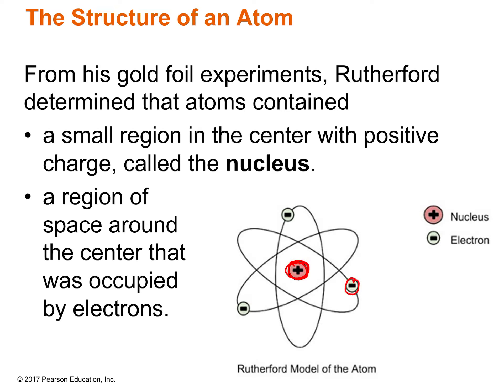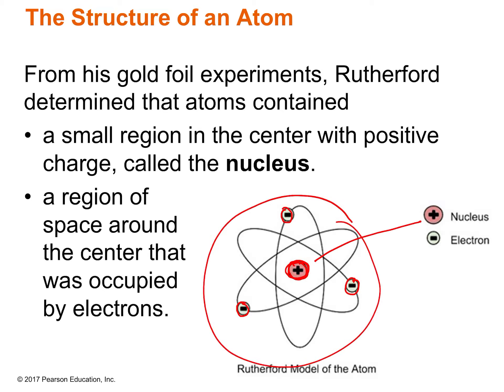From the gold foil experiment, he figured out there was a small region in the middle called the nucleus — hard, dense, and positively charged. He said most of the atom must be empty space because most of the alpha particles went straight through; they weren't hitting anything. The electrons must be out there somewhere, hanging out in this empty space, zooming around. So the middle is called the nucleus, and the region outside the nucleus is called the electron cloud.